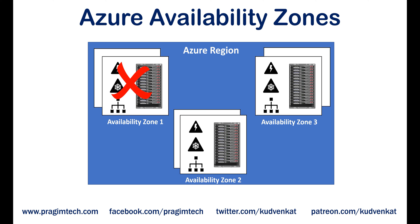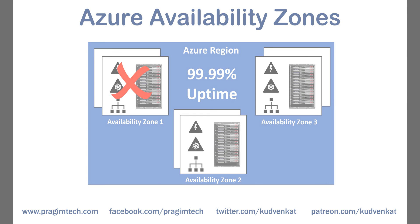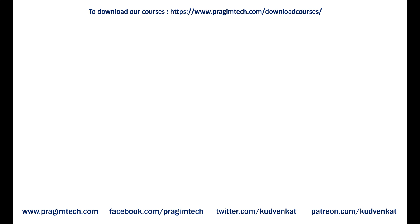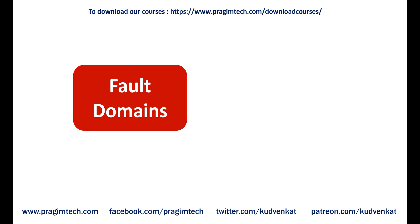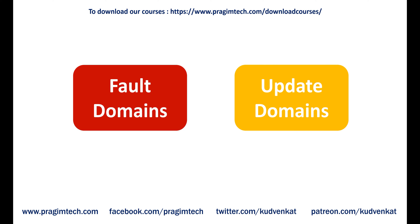With availability zones, Azure offers an industry-best 99.99% virtual machine uptime SLA — service level agreement. Next, let's understand fault domains and update domains. An availability zone is a combination of a fault domain and an update domain.